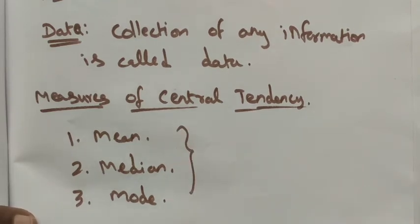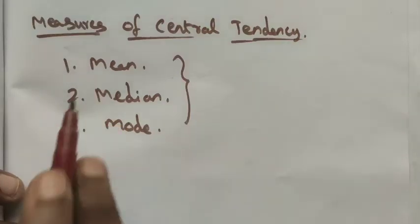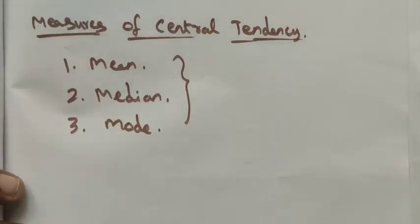So the measures of central tendency means mean, median, and mode. All the terms we are going to learn relate to the average of particular data — that is the central tendency. Simply, we can say it is the mean or arithmetic mean.